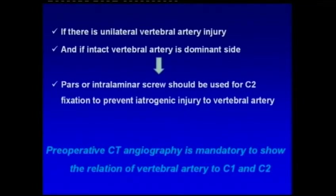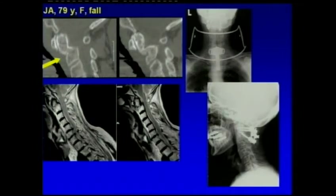If there is unilateral vertebral artery injury and the intact vertebral artery is on the dominant side, pars or intralaminar screws should be used for C2 fixation to prevent iatrogenic injury to the vertebral artery. Preoperative CT angiography is mandatory to show the relation of the vertebral artery to C1-C2. In a 70-year-old female patient with an anterior oblique type fracture, posterior C1-C2 fixation was performed and good reduction of the fracture was achieved.